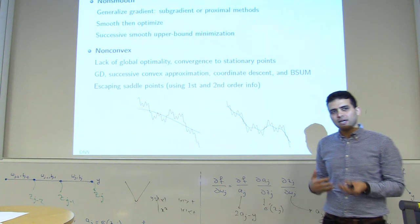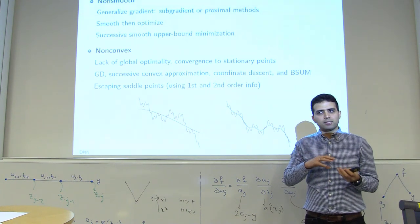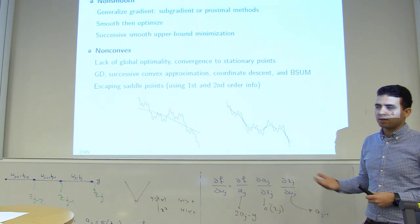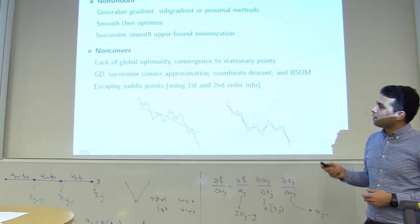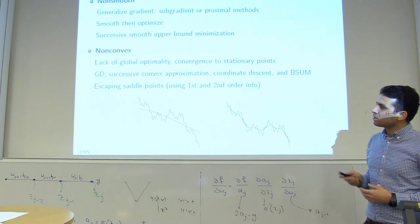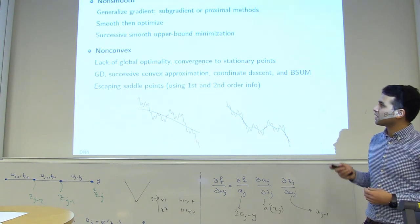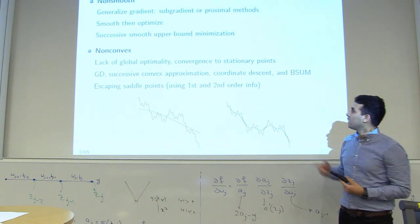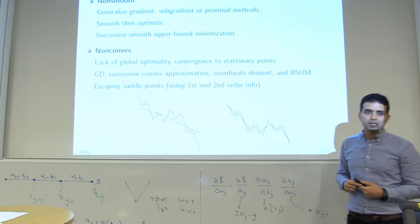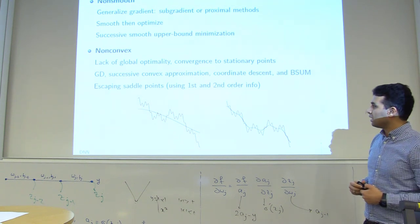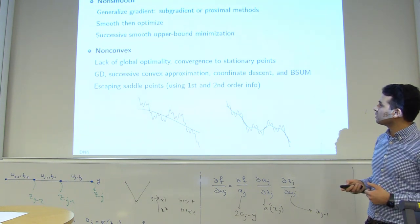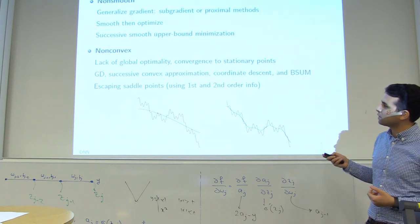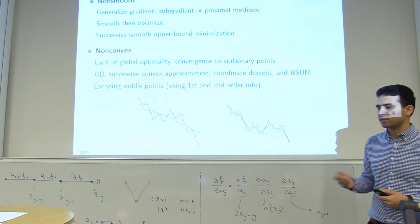With second-order information, we can go downhill using eigenvectors corresponding to negative eigenvalues — choosing the one with the strongest negative eigenvalue. We've seen solvers like gradient descent, successive convex approximation, coordinate descent, and block successive upper bound minimization. Neural networks can be seen as a combination of coordinate descent and stochastic gradient descent.